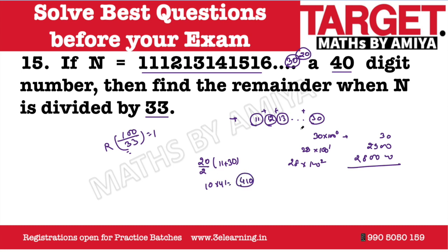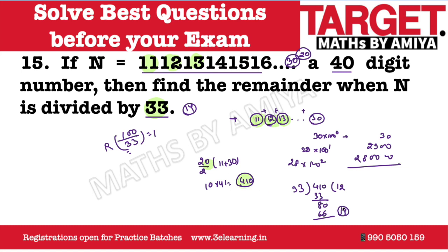This would be nothing but 10 × 41 = 410. So this is the summation of all the numbers. We need to divide it by 33. So 410 divided by 33: 33 × 1 = 33, giving us 80 remaining; then 33 × 2 = 66, so the remainder is 14. The answer to this question is 14. Whenever you have to divide any number by 33, make a bundle of double digits, add all double digits, then again divide by 33 — you will get your answer.